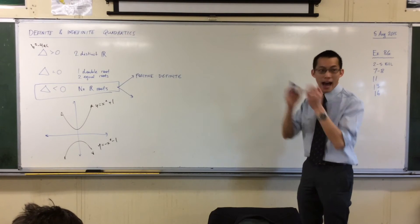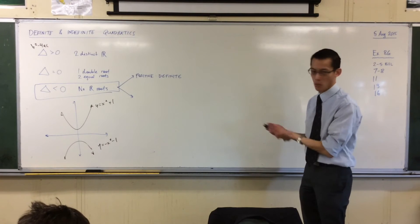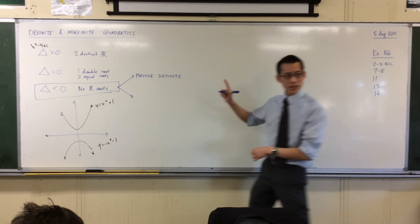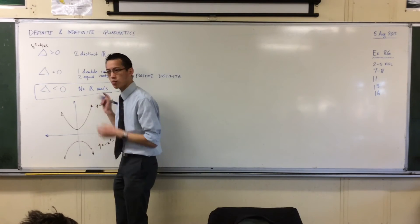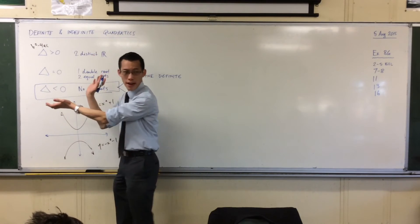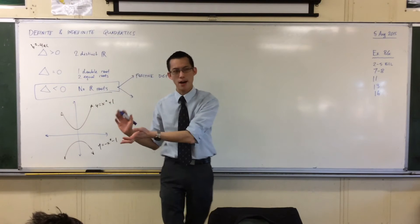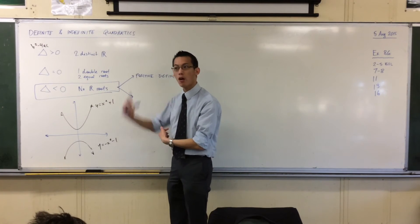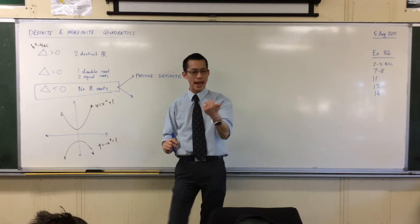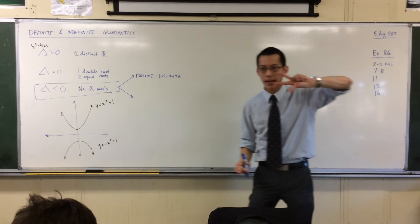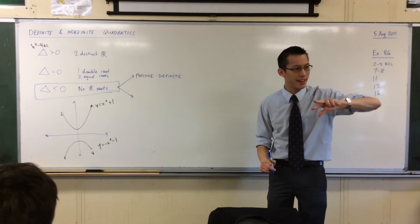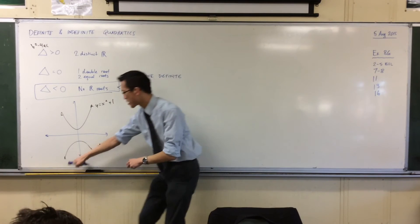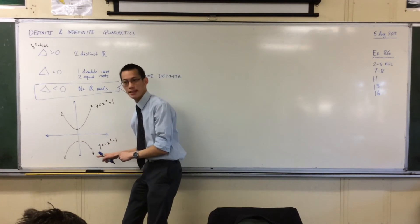No matter what value of x you put in, you'll get a definite positive value for y. Because this parabola is concave up, it is positive definite. What makes it concave up is the value of a — the leading coefficient. That's why a minus 1 turns the parabola upside down.